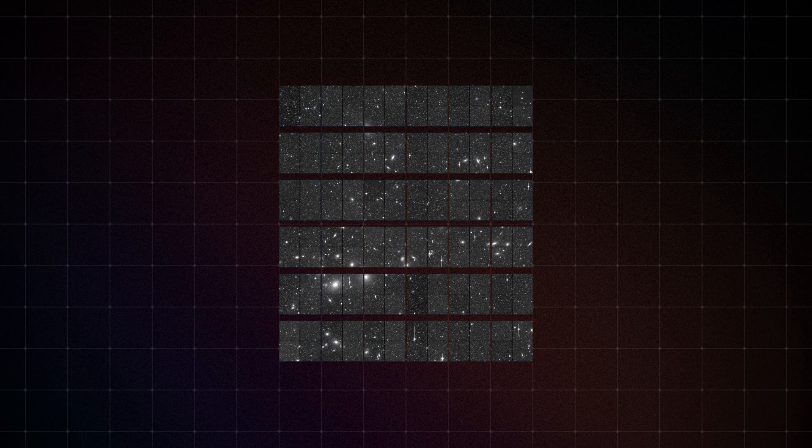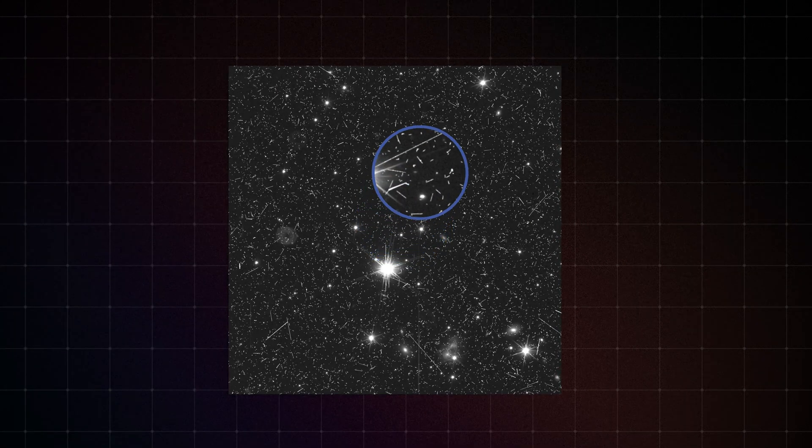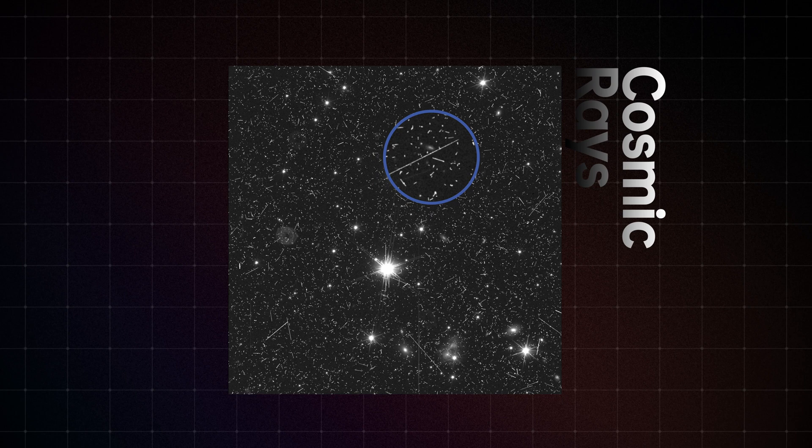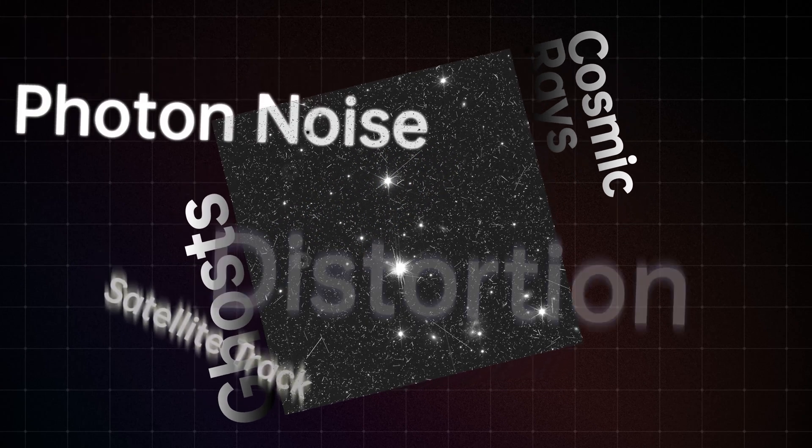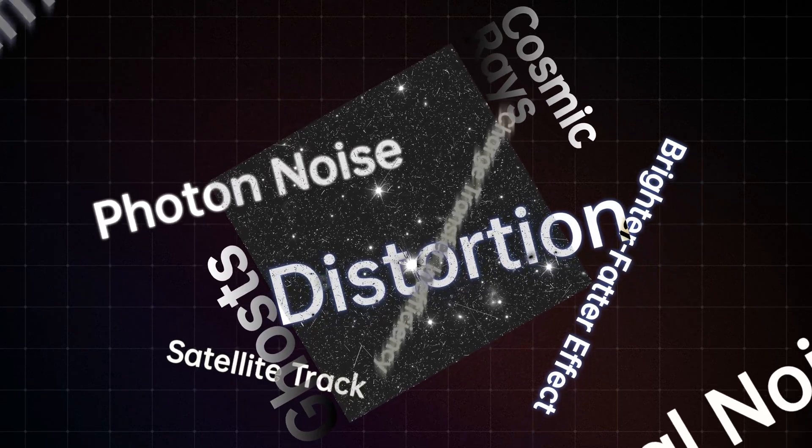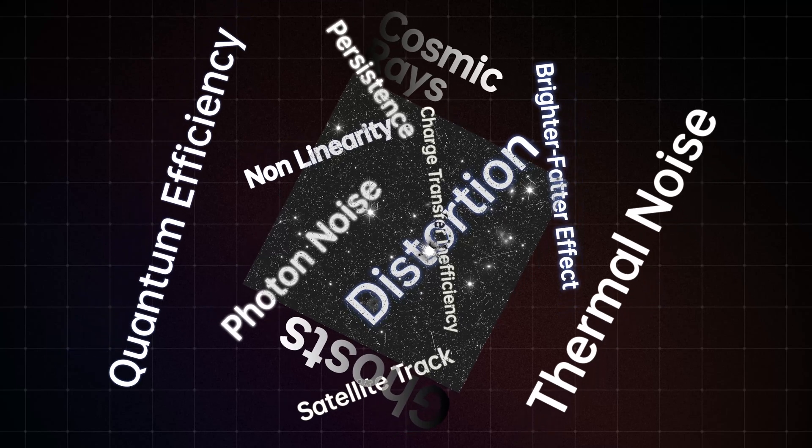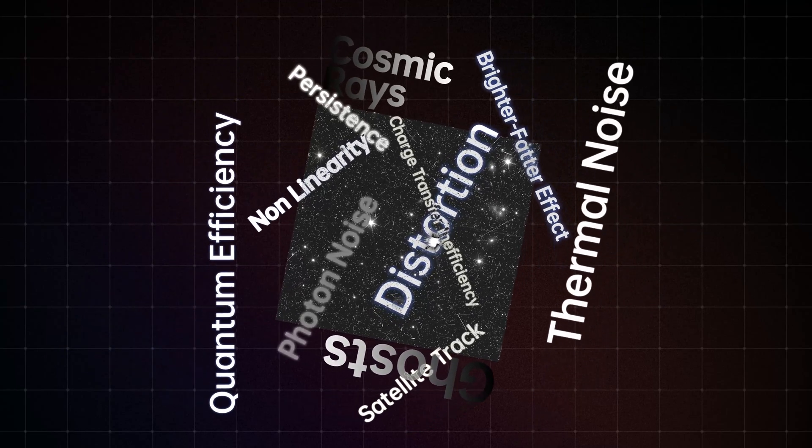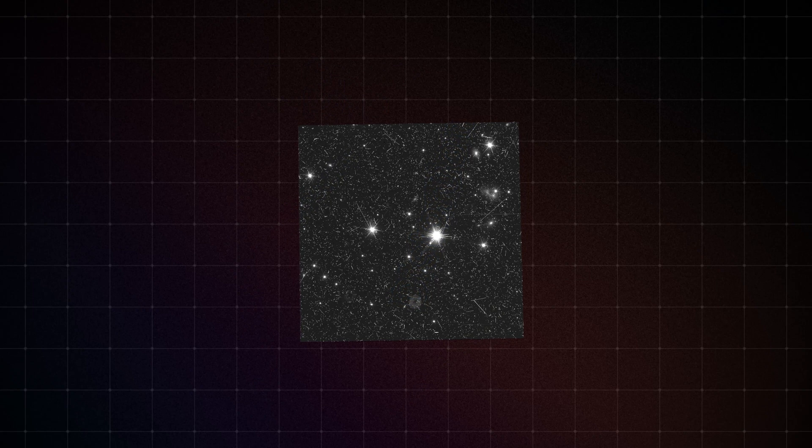Here's the raw image of one quadrant from one of the 16 exposures of the Perseus cluster. Upon closer inspection, you'll notice some imperfections such as cosmic rays and ghosts. Other defects such as thermal noise or optical distortion are present but are barely noticeable to the naked eye. Euclid scientists are well prepared to address these challenges.